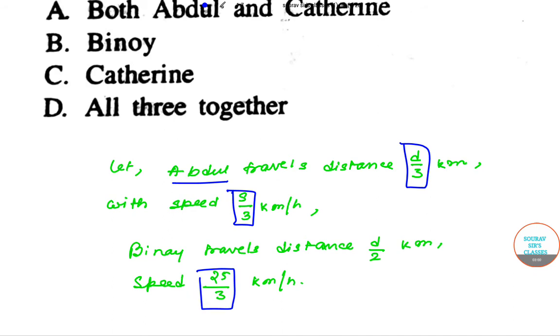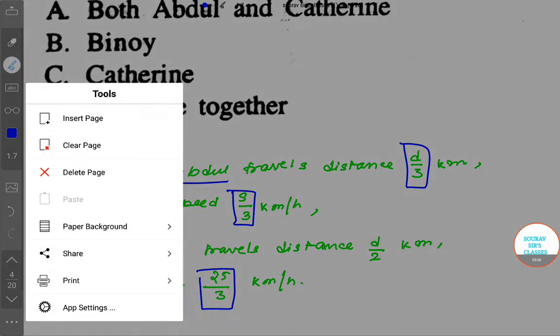Now let me insert a page first. So here, time of travel for Abdul first: Abdul is d/s hours and Catherine is 3/s.